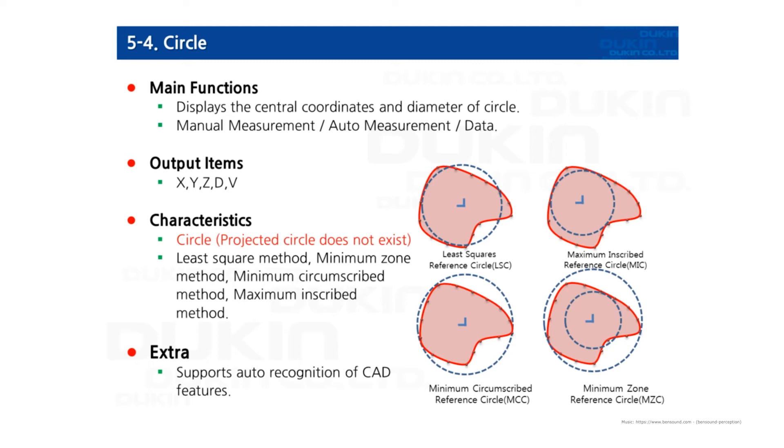The minimum measuring point required of measuring a circle is three points. And in output, X, Y, Z coordinates are on the center of the circle and diameter. NeuMeasure supports four different calculation methods for circle, as you can see here.